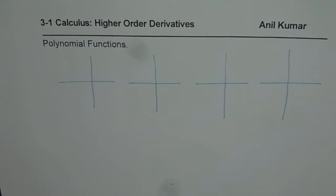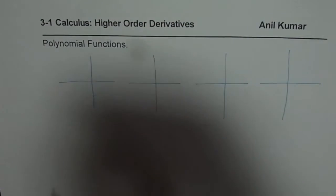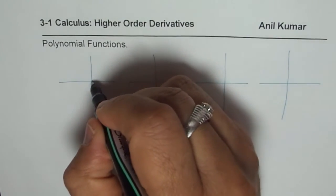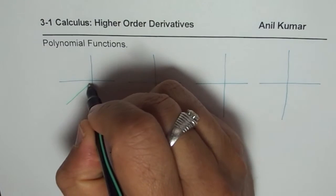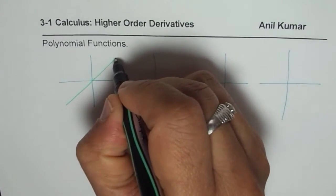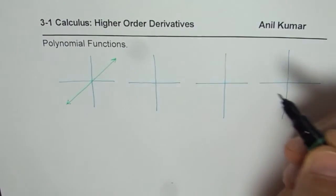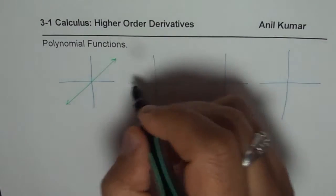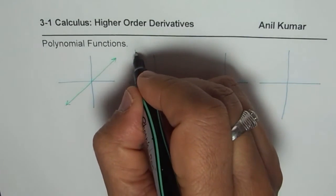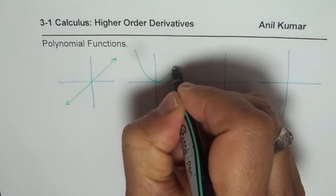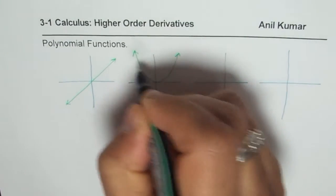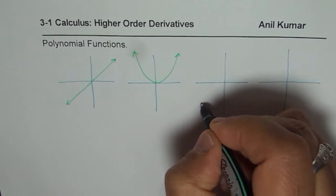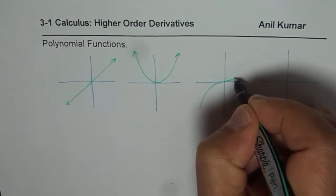When we are talking about polynomial functions, we are talking about a linear function, for example. So we will consider a straight line — let us say this is my linear function, y equals to x. I am considering parent functions for ease of calculation. And then we have a parabola, which is second order, and then we have a cubic function.